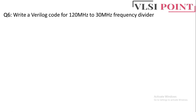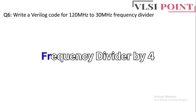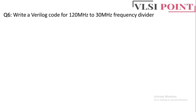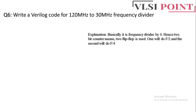Next question: write a Verilog code for a 120 MHz to 30 MHz frequency divider. This is a very good question that may appear in interviews and written exams. 120 divided by 30 equals 4, so this is a divide-by-4 frequency divider. Recall that a flip-flop acts as a divide-by-2 circuit, so by using two flip-flops in cascade — each dividing by 2 — you get a total divide-by-4 circuit.